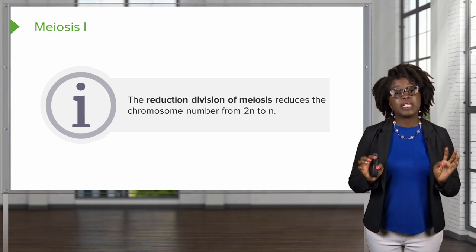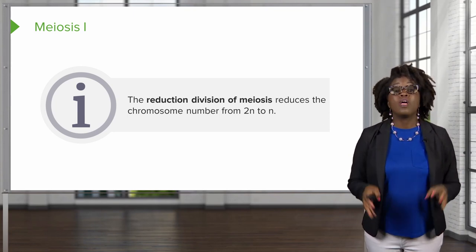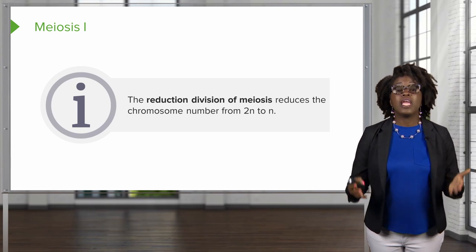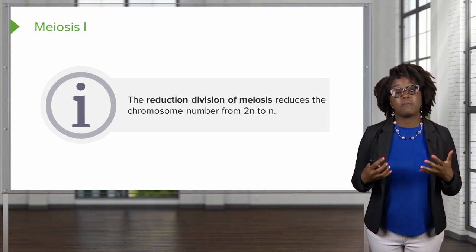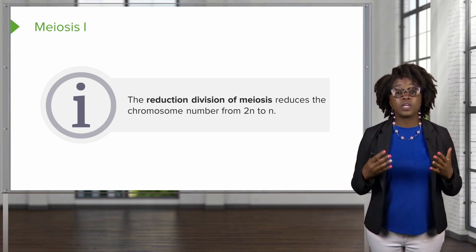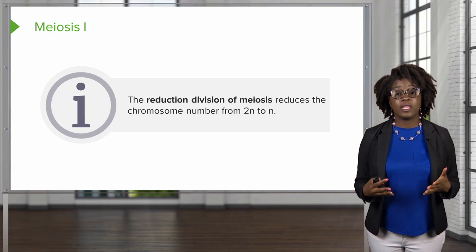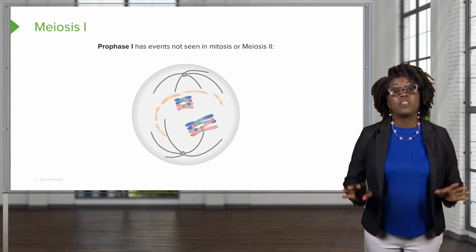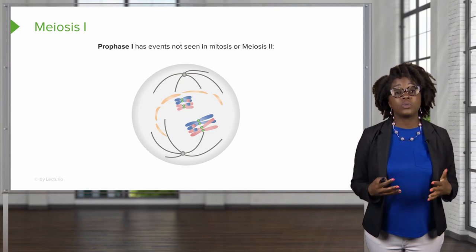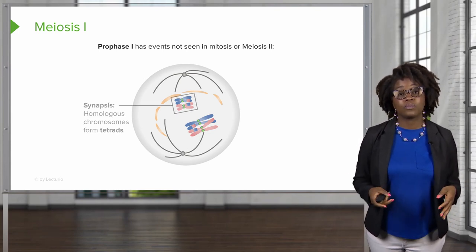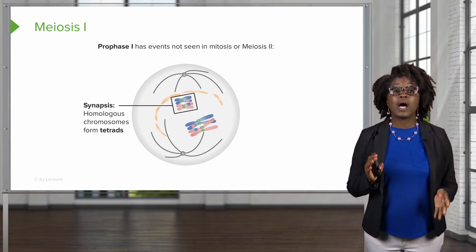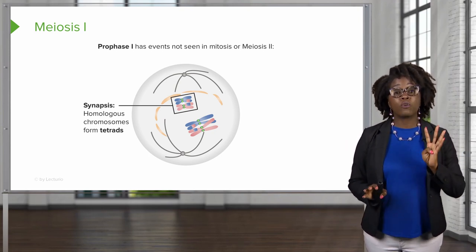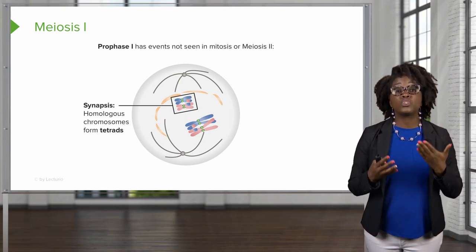There are two divisions that occur in meiosis. The first is meiosis I, which is the reduction division, where we reduce the chromosome number from diploid (2N) to haploid (N). First, in prophase I, we have events that we do not see in mitosis or meiosis II. These events include synapsis, where the homologous chromosomes pair up forming a tetrad consisting of four chromatids, since they are in a duplicated sister chromatid format.